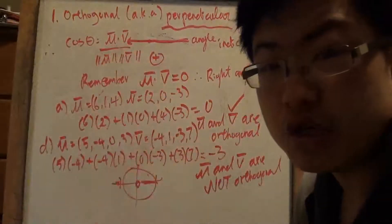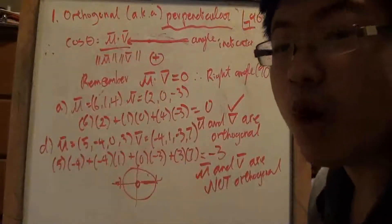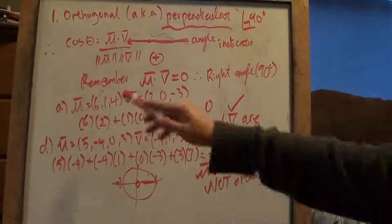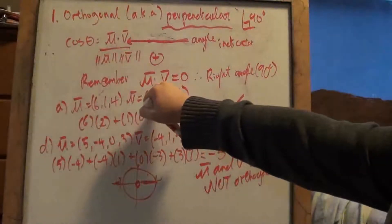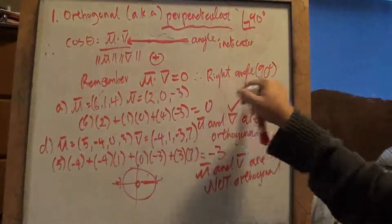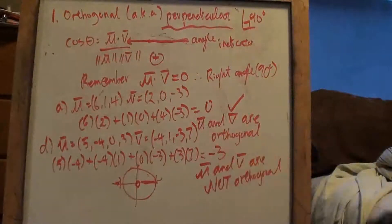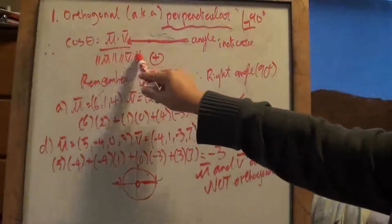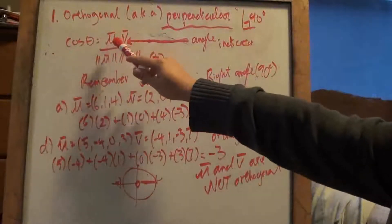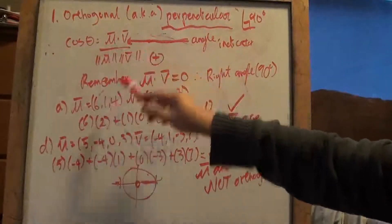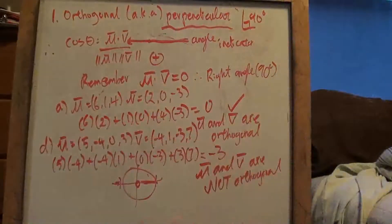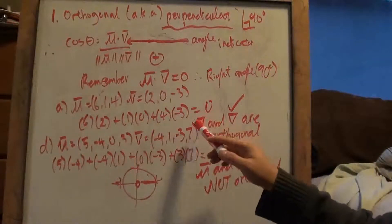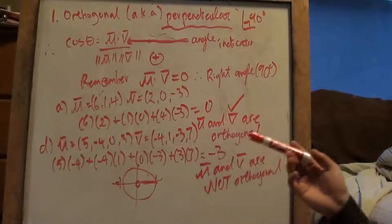So we have to worry about acute, obtuse, and right angles. For this unit, all we care about is whether there's a right angle or not — that's the whole point of orthogonal. All we're checking is whether the dot product of vectors u and v equals zero. That's how we know if they're right angles. So let's proceed. For question A, you have two vectors. We just do the dot product, and it happens to be 0. So we say vector u and vector v are orthogonal, or perpendicular.